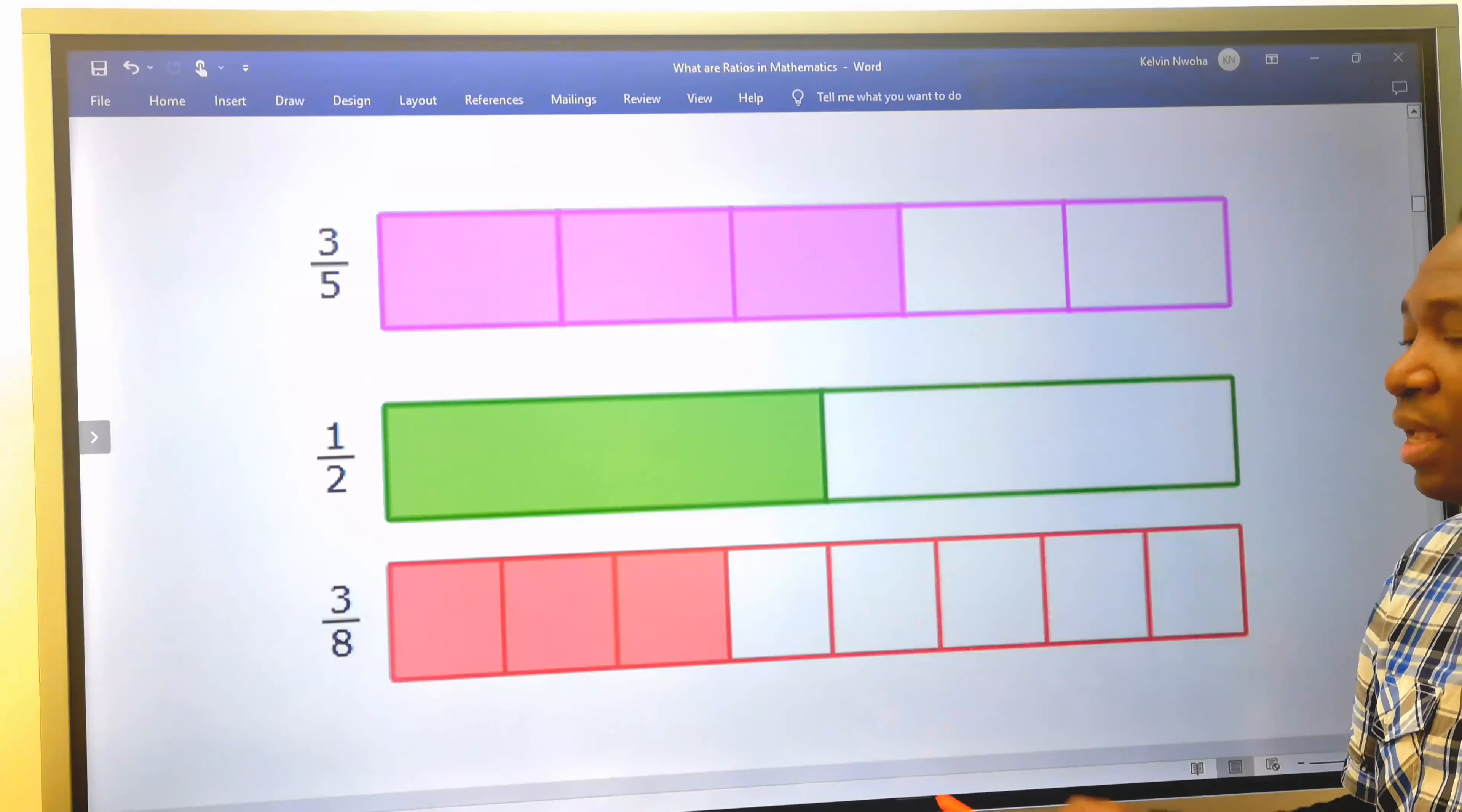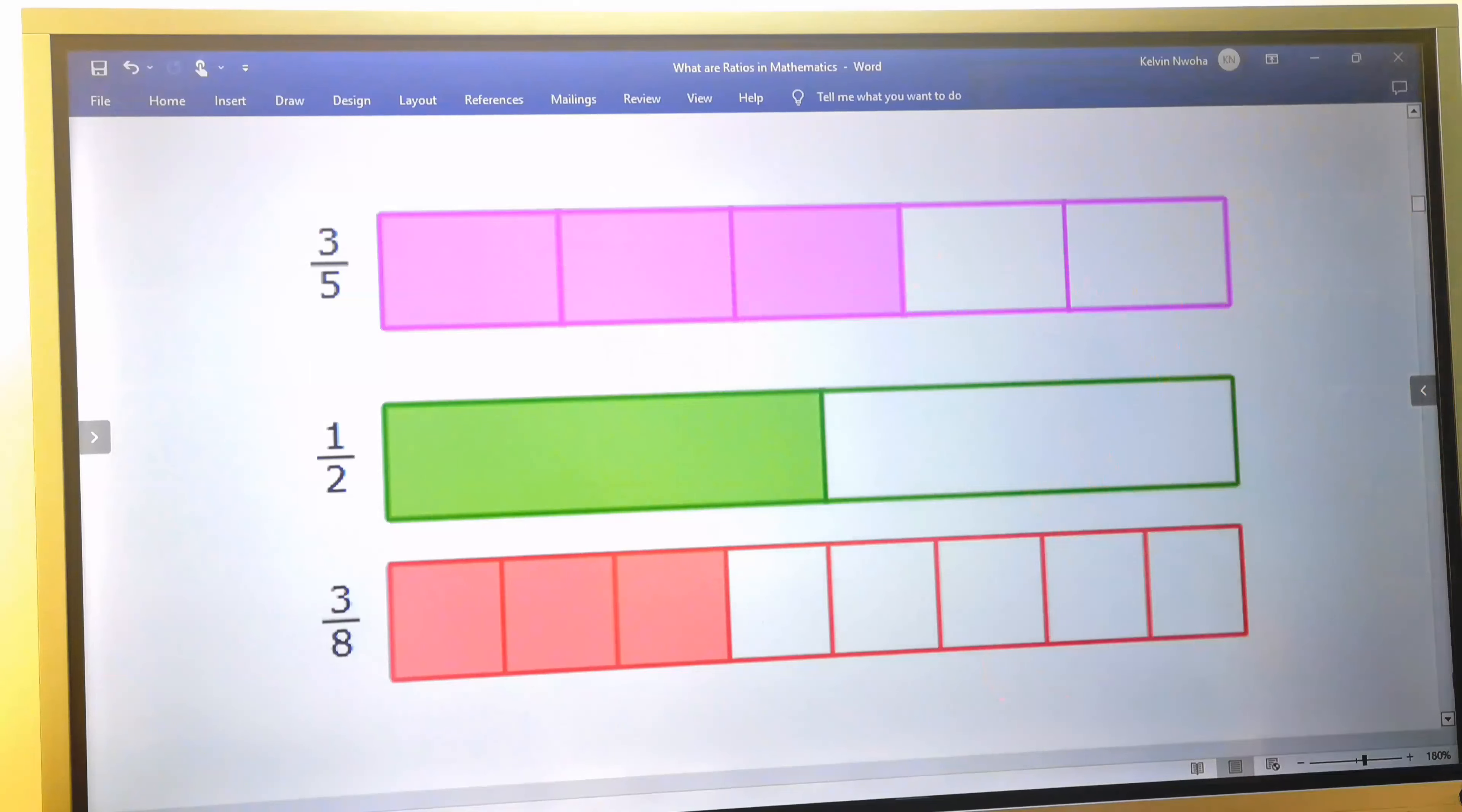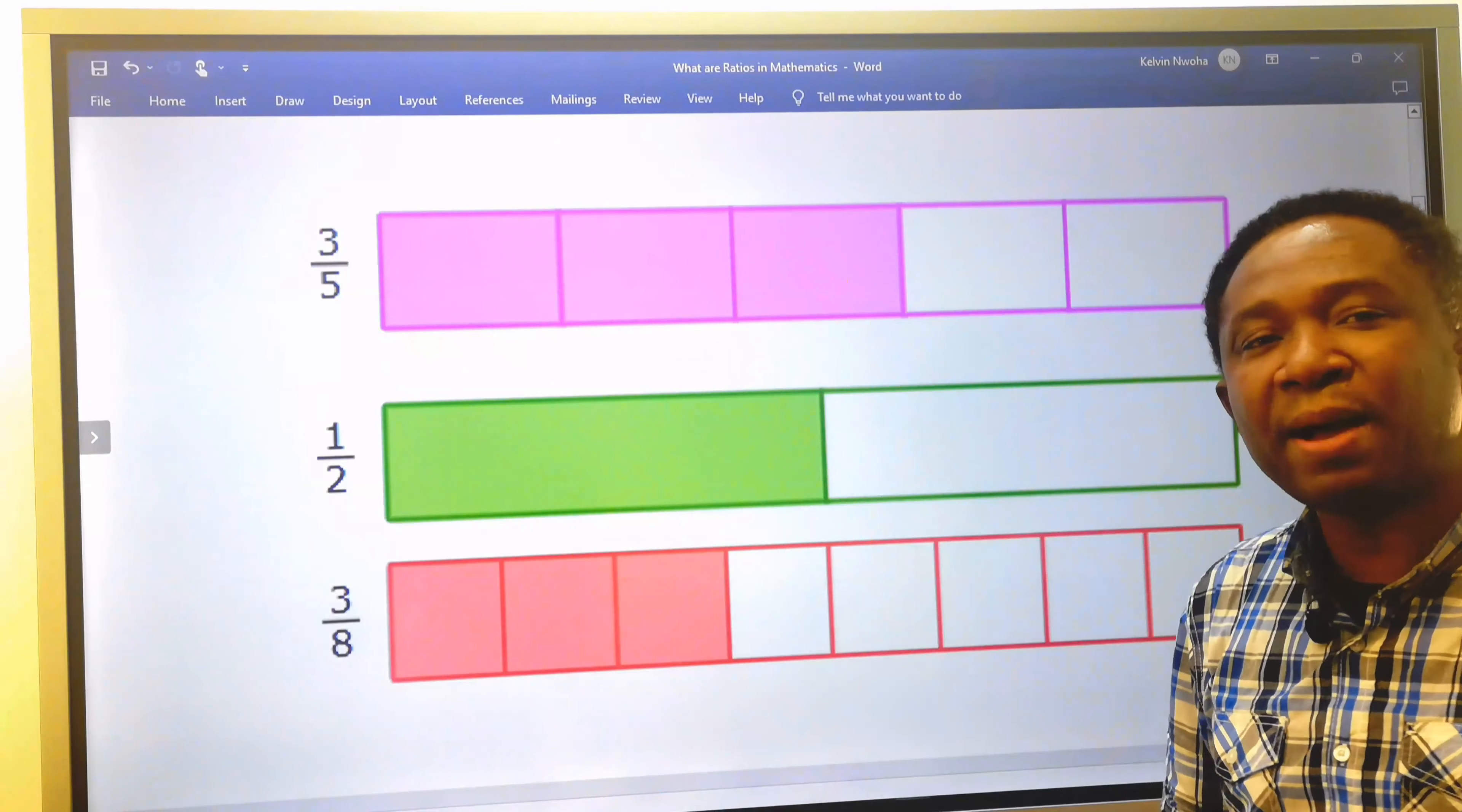Consider these three rectangles. The first rectangle has a division of five. The first three parts are shaded. That means of these five parts, three were shaded. This is three to the ratio of the whole five. We can also say two to the ratio of these five if we are considering the sides that were not shaded. Hence, three ratio five is indicating only the shaded parts.